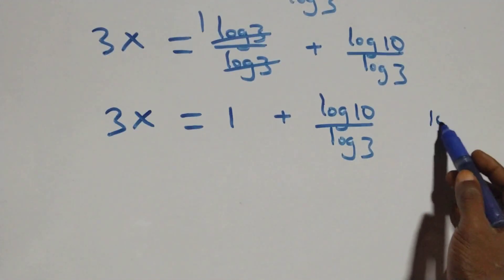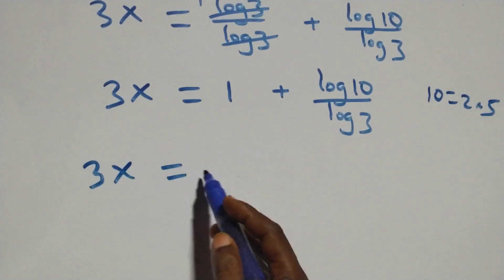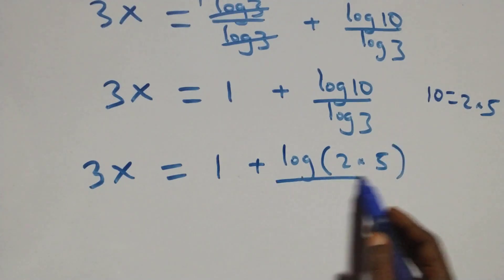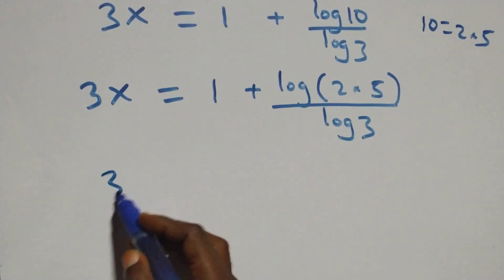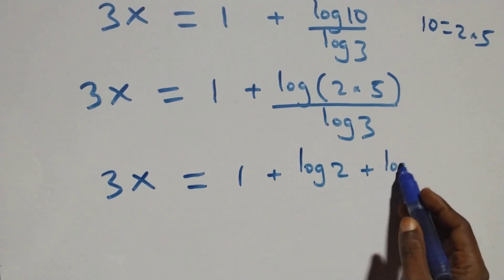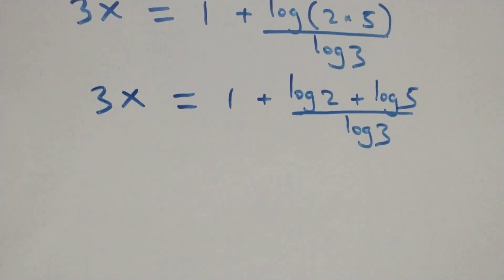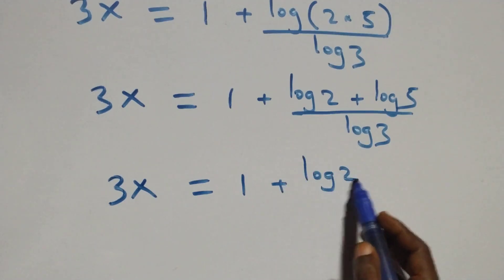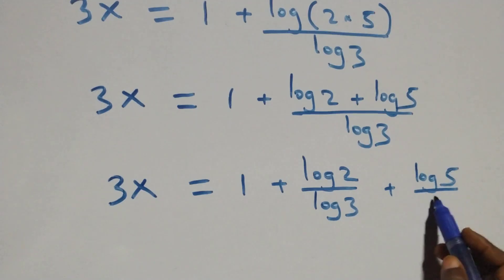From here, 10 can be expressed as 2 times 5. So we have 3x equals log(2 times 5) over log 3. Expanding using the log product rule, this gives 3x equals 1 plus log 2 over log 3 plus log 5 over log 3.